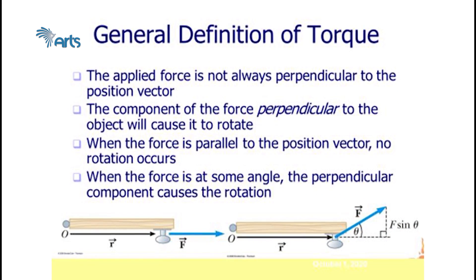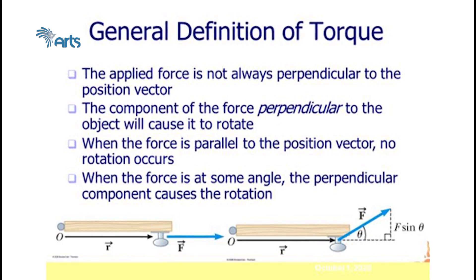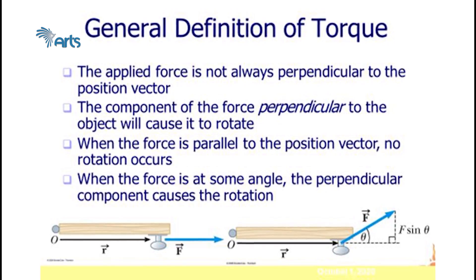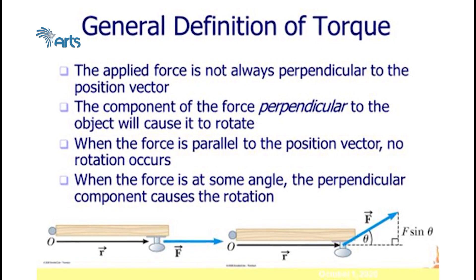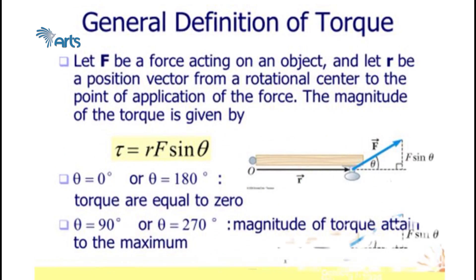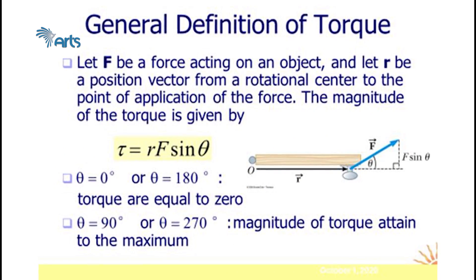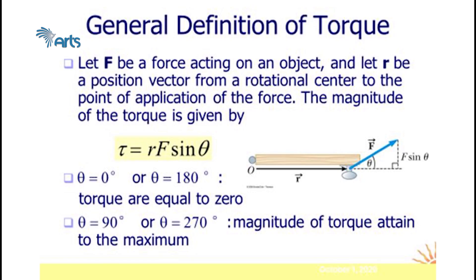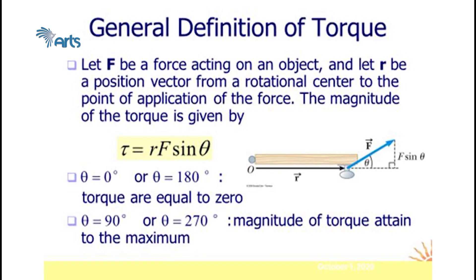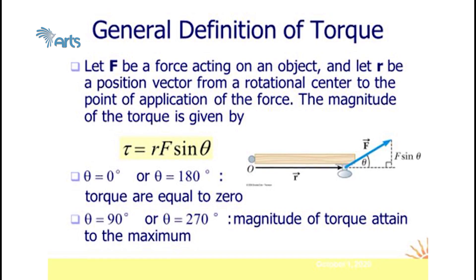Generally, torque is defined as the cross product of R and F. Its magnitude is simply R·F·sin(theta), where theta is the smaller angle between R and F. If theta is 0° or 180°, torque is zero. If theta is 90° or 270°, the magnitude of torque reaches its maximum.